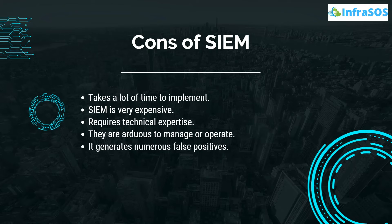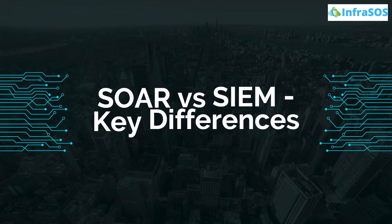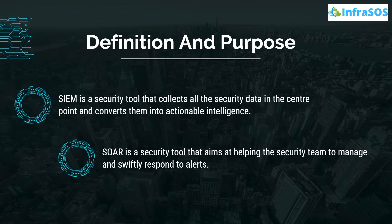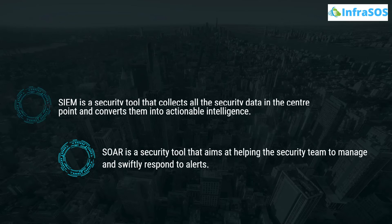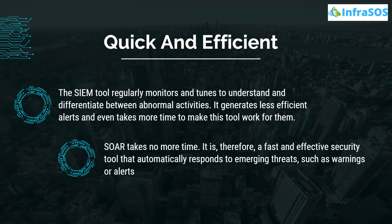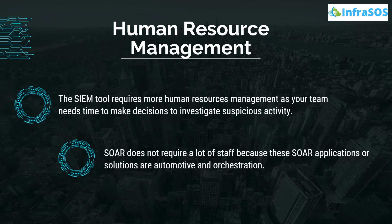Now that we are aware of the pros and cons of SOAR and SIEM, let's put them against each other and talk about their key differences. At number one, we have definition and purpose: SIEM is a security tool that collects all security data at a central point and converts it into actionable intelligence, whereas SOAR is a security tool that aims at helping security teams manage and swiftly respond to alerts. In terms of being quick and efficient, SIEM tools regularly monitor and tune to understand and differentiate abnormal activities, but generate less efficient alerts and take more time to work effectively. SOAR, on the other hand, is a fast and effective security tool that automatically responds to emerging threats. Finally, on human resource management, SIEM tools require more human resource management as teams need time to investigate suspicious activity, whereas SOAR does not require as much staff because its solutions are automated and orchestrated.